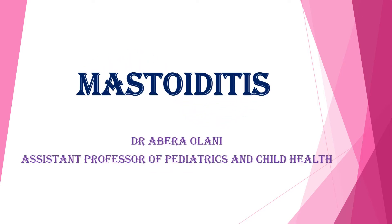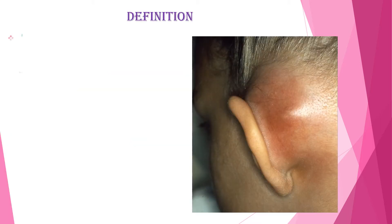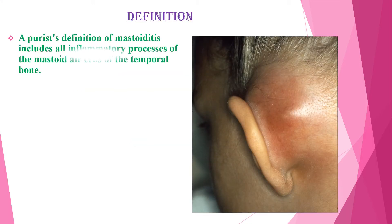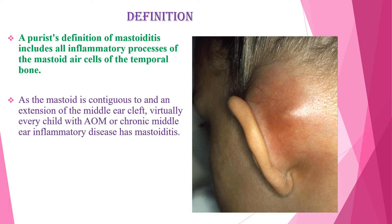Welcome back everyone. Today's lesson is about mastoiditis. A basic definition of mastoiditis is an inflammatory process of the mastoid air cells of the temporal bone. As the mastoid is contiguous to and an extension of the middle ear cleft, virtually every child with acute otitis media or chronic middle ear inflammatory disease has mastoiditis.